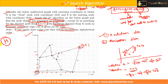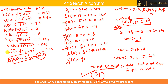They can ask different types of questions: what is the path, what is the cost, what is the open list, what is the closed list, and which node is not generated — five types of questions from this single problem.